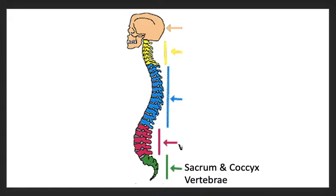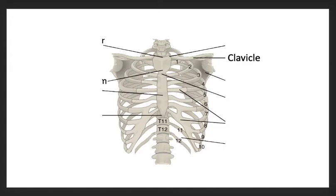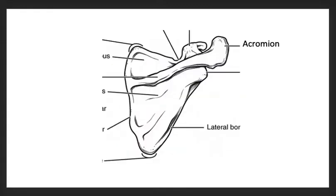Next is the thoracic cage, which includes the clavicle, scapula, sternal angle, costal cartilages or ribs, true ribs and false ribs or floating ribs, intercostal space which is the space between the ribs, jugular notch, sternum, and the xiphoid process.